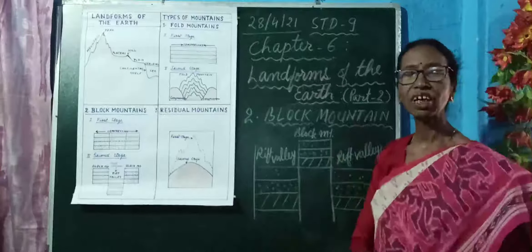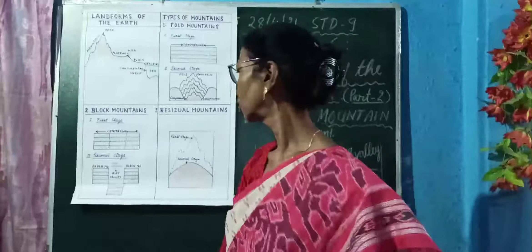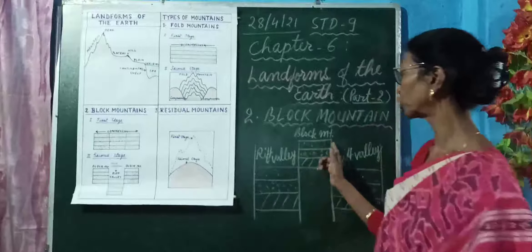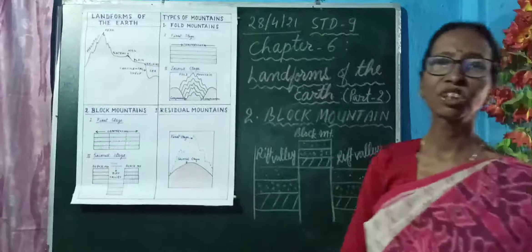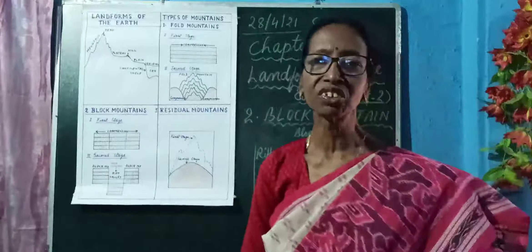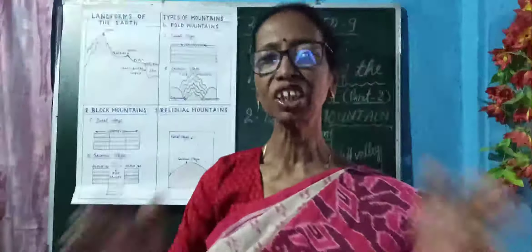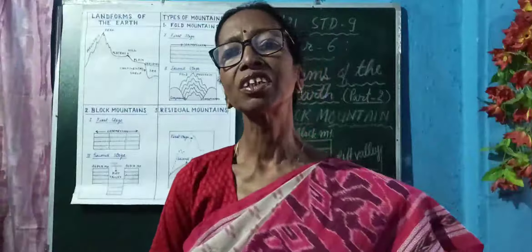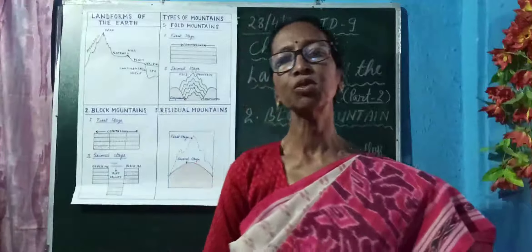What are block mountains? If you see the diagram, block mountains have a flat top with steep sides. They do not have a conical peak. They always have a flat top. Then, how are they formed?